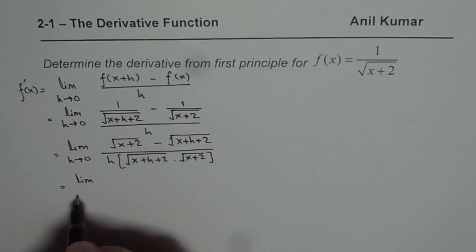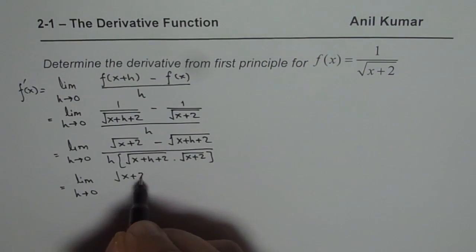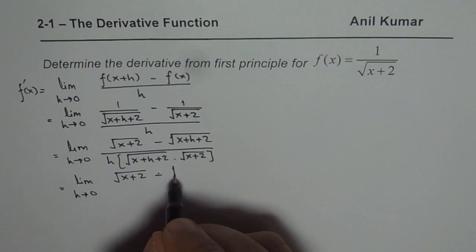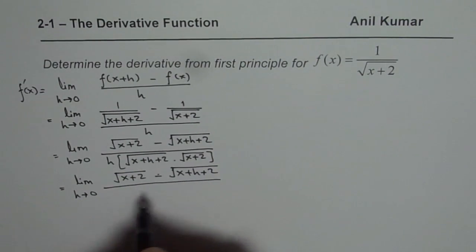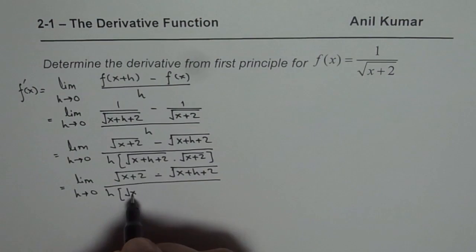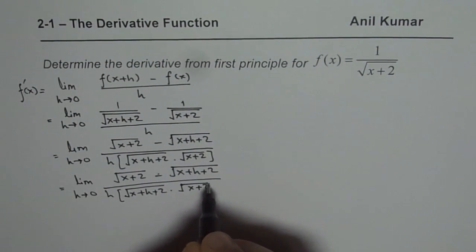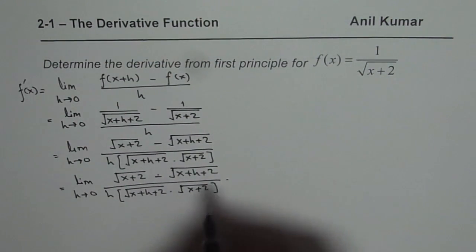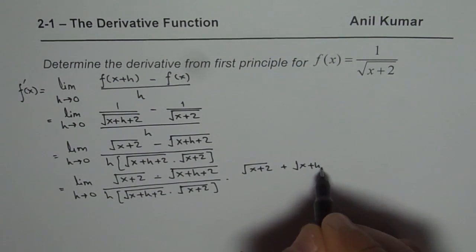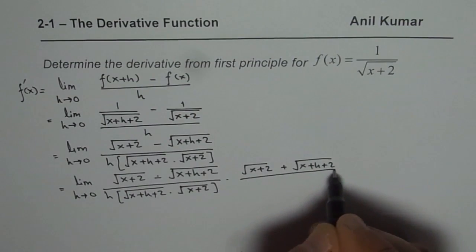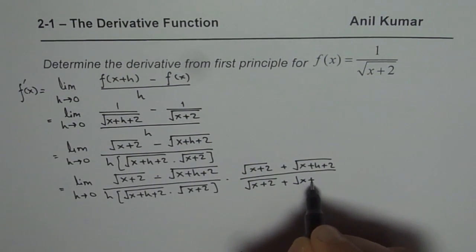To further simplify we need to rationalize. All square root functions should be rationalized to further simplify. So we multiply by the conjugate, which is square root of x plus 2 plus square root of x plus h plus 2, over square root of x plus h plus 2.